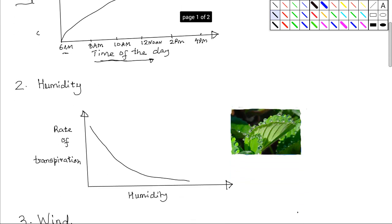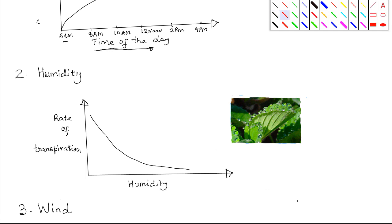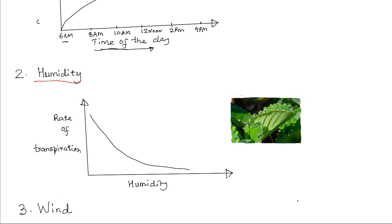A second factor that influences the rate of transpiration is humidity. Humidity is a very important factor. In fact, the humidity of a place determines the kind of plants that will survive there, because it has a direct bearing on the rate of water loss. The rate of transpiration is generally high when the humidity is low, and when the humidity rises the rate of transpiration will tend to decrease. When the humidity is low it means that there is very low concentration of water vapor in the atmosphere, and this will promote the diffusion of water molecules from inside the leaf to the surroundings, thereby leading to a high rate of transpiration.